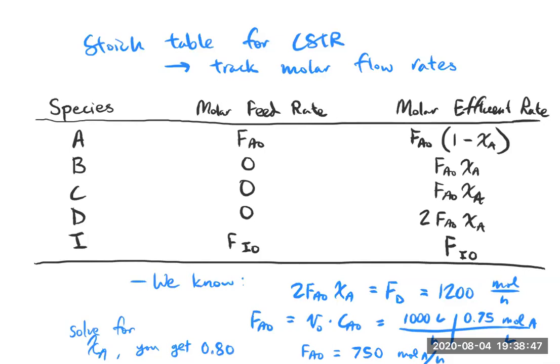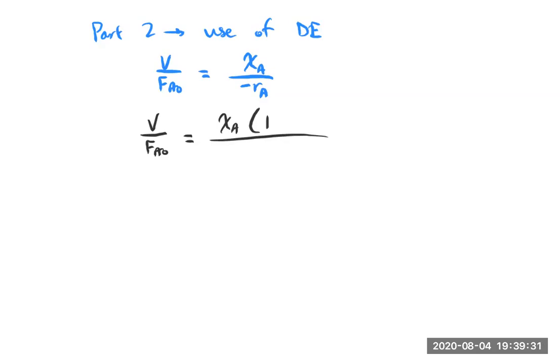So now I'm going to move on to the next page. And so now we're going to do the part two use of the design equation. So we have this design equation, which we used before for CSTRs, V over FA0 equals XA over negative rA. And now we can substitute for rA. Well, we could always do that with what was given. So let's go ahead and do that. So we have conversion of A, which we've recently figured out is 0.8. And then we have, what I'm writing now is the rate expression, but I've accounted for the fact that it's in the denominator.